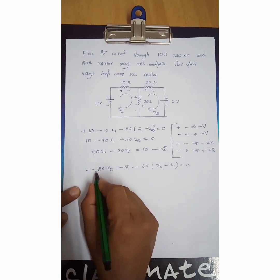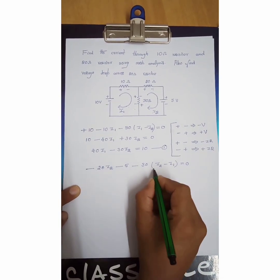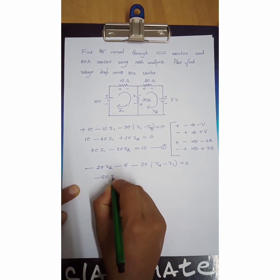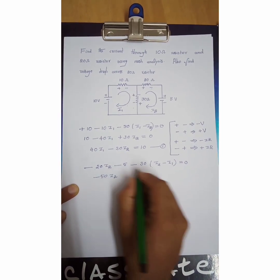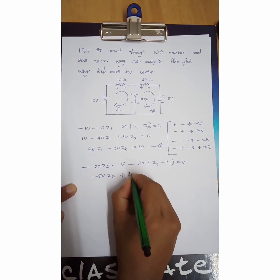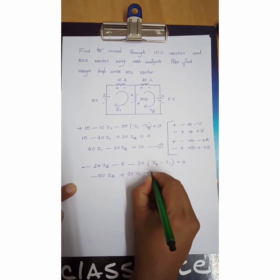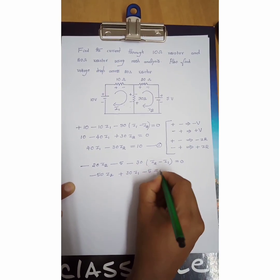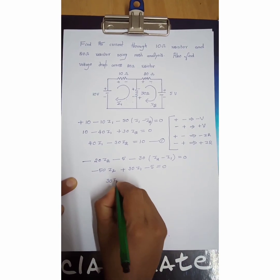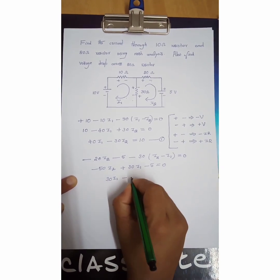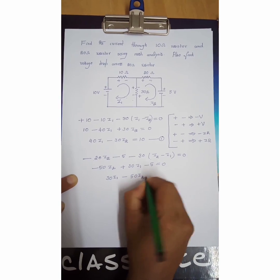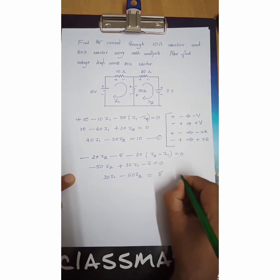Simplifying the second loop equation: minus 20I2 minus 30I2 gives minus 50I2, and minus times minus gives plus 30I1, minus 5 equals 0. Rearranging: 30I1 − 50I2 = 5. This is the second equation.